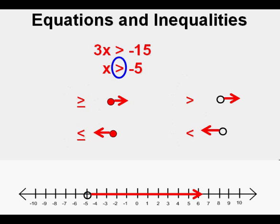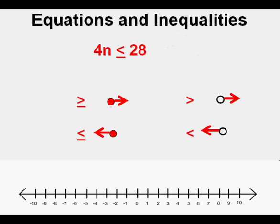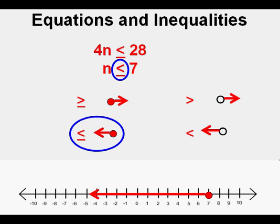Let's look at another inequality: 6n minus 6 is less than or equal to 22. To find the boundary point we solve for n — we first move the negative 6 over to the right side, where it becomes positive 6. We combine like terms and get 28 on the right. Now we divide both sides by 4, so n is less than or equal to 7. To graph it, we look at the direction of the symbol and whether it will be a solid point or an open circle. We put the solid boundary point at 7 and draw the arrow to the left, meaning it goes all the way to negative infinity.